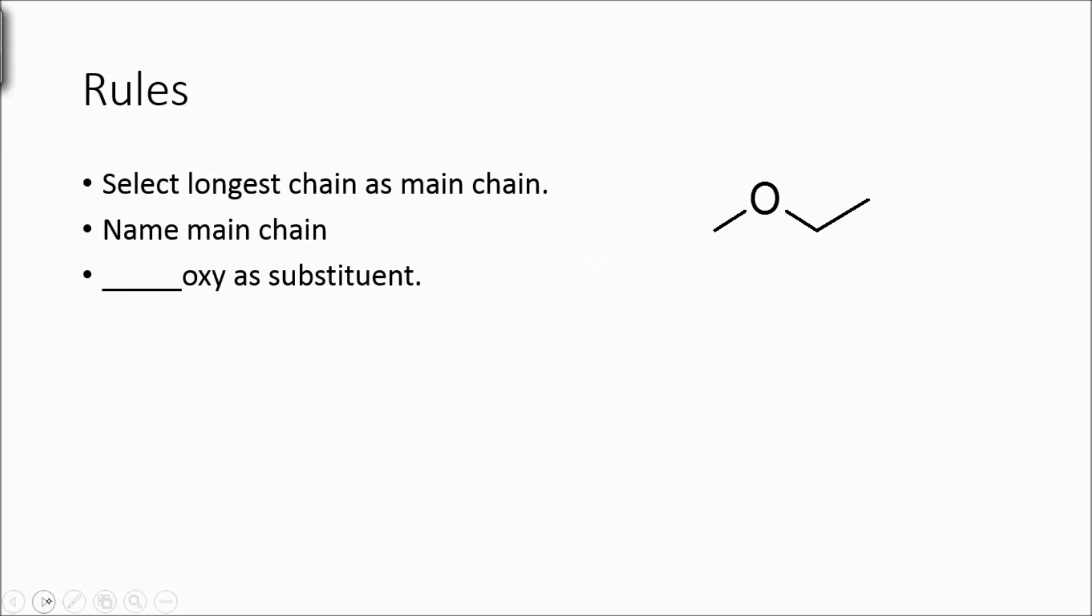When we name an ether, we have to first select a main chain. We've got two chains around the oxygen, so we select the longest one as the main chain.